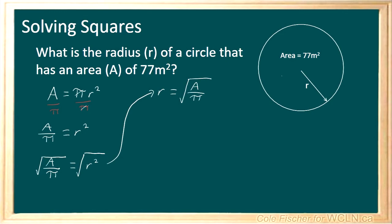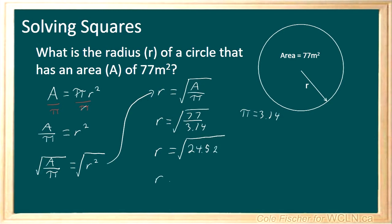From here, we can plug in the numbers for the area and for pi. So we have R is equal to the square root of 77 over 3.14. Now, 77 divided by 3.14 gives us 24.52, and taking the square root of 24.52 gives us 4.95 meters.